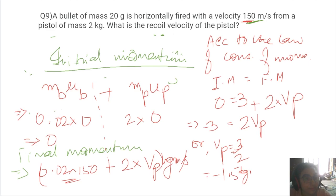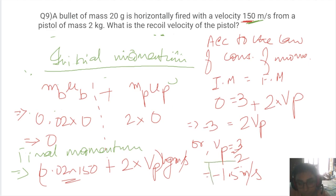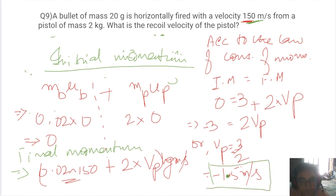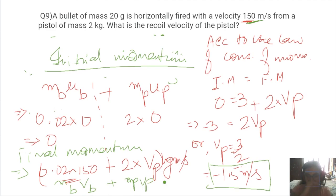The recoil velocity of the pistol is 1.5 m/s in the direction opposite to the bullet. This can be written as: M_b × V_b + M_p × V_p = 0 by conservation of momentum.